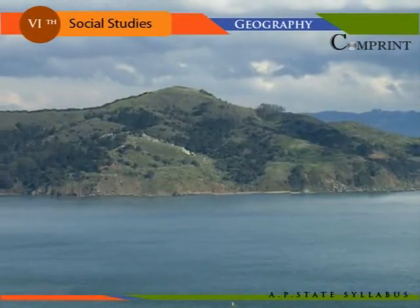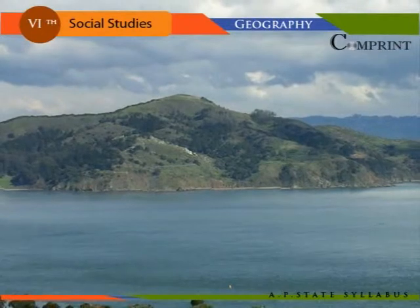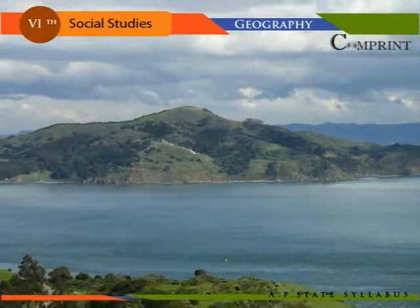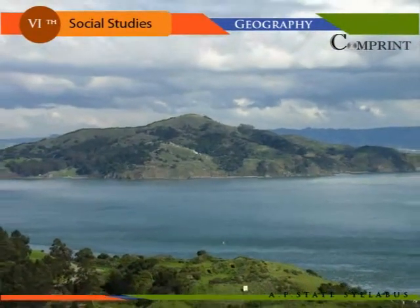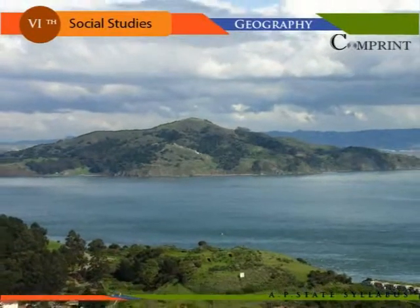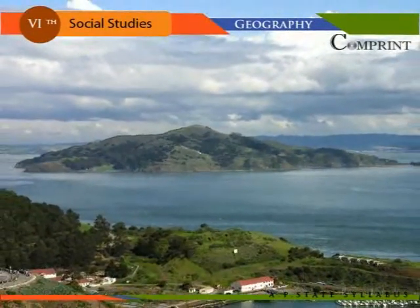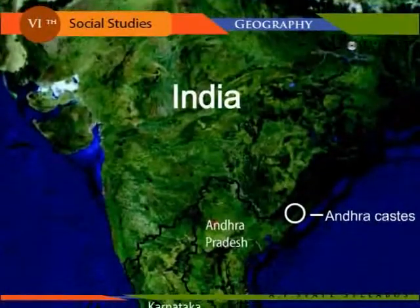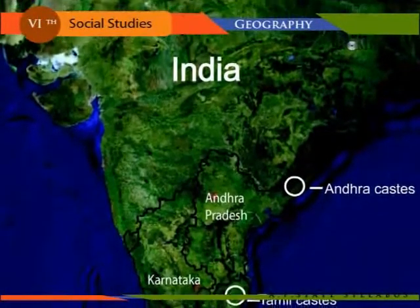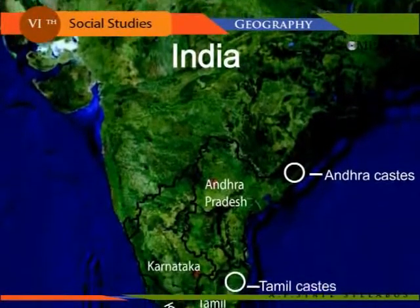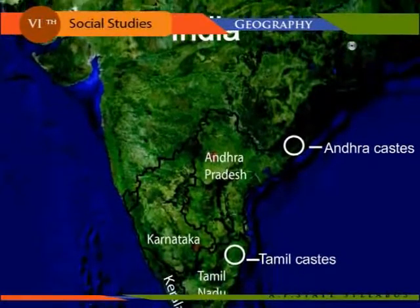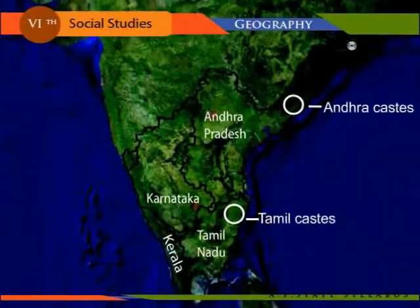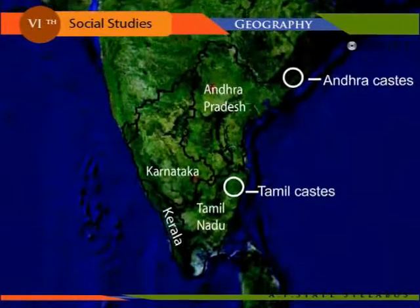A piece of land surrounded by water on all sides is known as an island — for example, Japan, Greenland, Indonesia, etc. A piece of land surrounded by water only on three sides is called a peninsula — for example, India and Cape York in Australia.